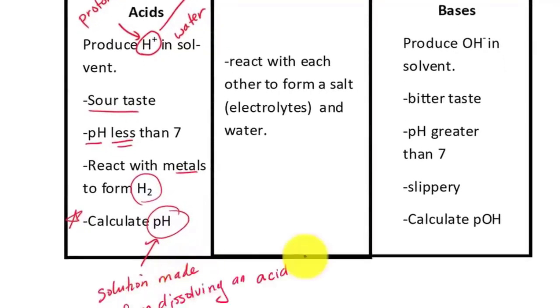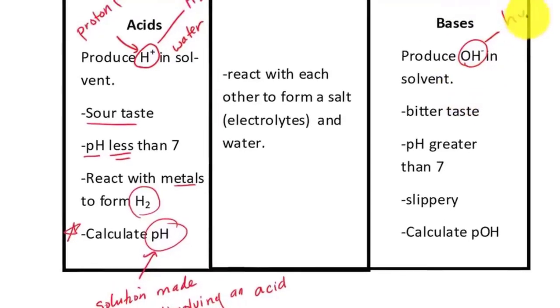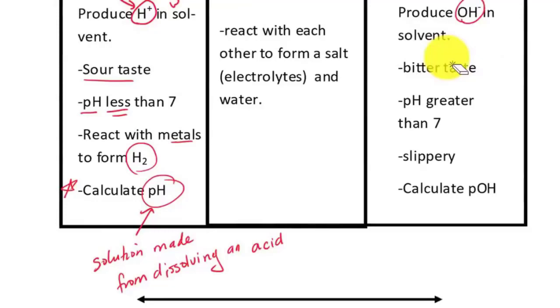Now, let's go over to the bases. The bases produce an OH minus, and the name of the ions for OH minus is hydroxide. Another characteristic of a base is that it has a bitter taste. Think of soap. If you ever taste soap before, it tastes very bitter.